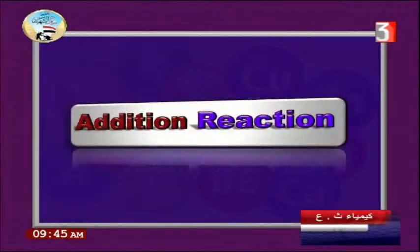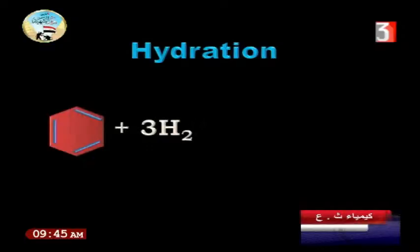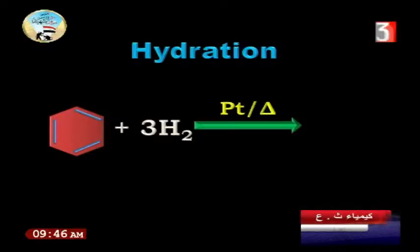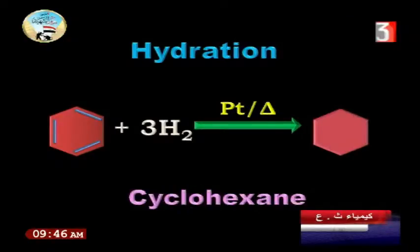Addition reaction: hydrogenation. If I break down the benzene double bonds in the presence of platinum and high temperature/heat, I get cyclohexane. This cyclohexane is the same shape as the benzene ring but without the double bonds, as seen in the energy graph.